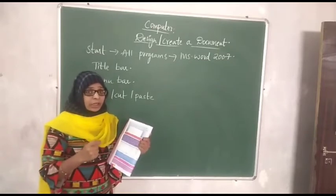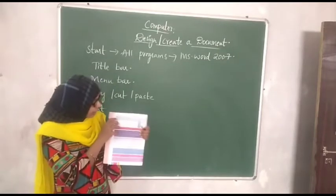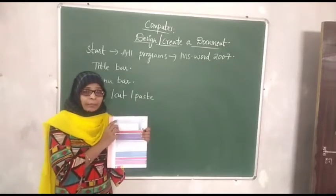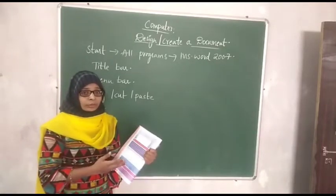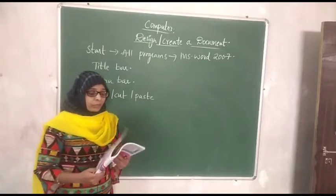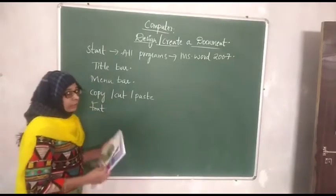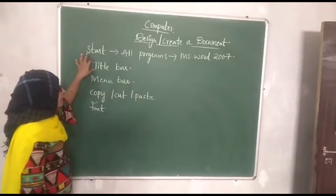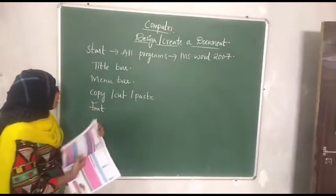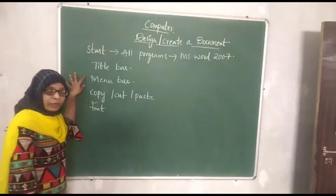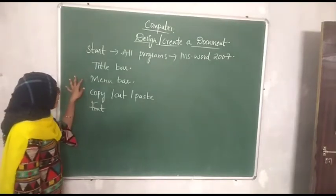Below that we have options for changing font and font size, and we also have cut, copy, and paste options. So the title bar is the blue color line at the top, and below that is the menu bar where we have a number of options which we can use in our document.